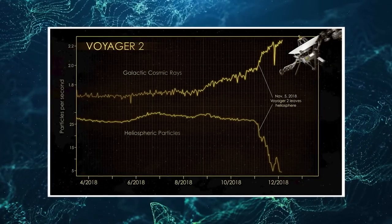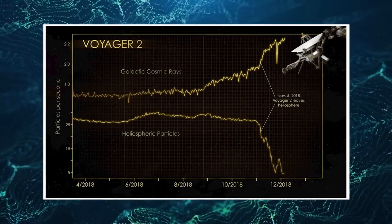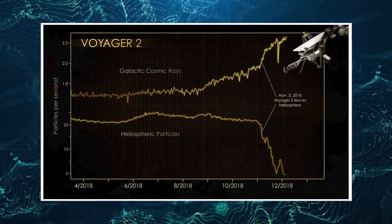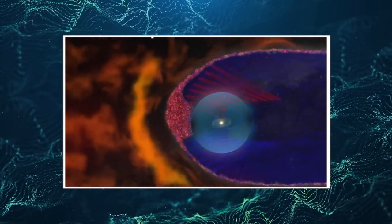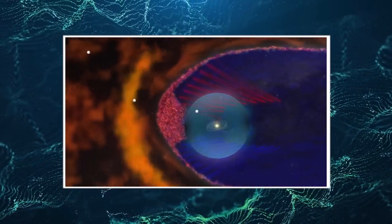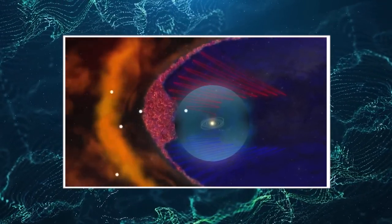Despite these challenges, the Voyagers continued to press on, gathering valuable data and insights into the mysteries of the universe. They studied the interactions between the solar wind and the interstellar medium, unraveling the secrets of the heliosphere, a protective bubble that encircles our solar system.